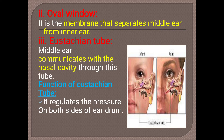The oval window is the membrane that separates the middle ear from the inner ear. The third part of the middle ear is the Eustachian tube — it is the tube through which the middle ear communicates with the nasal cavity. The function of the Eustachian tube is to regulate pressure on both sides of the eardrum.